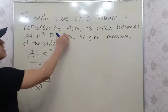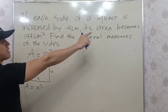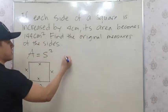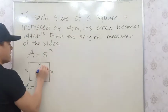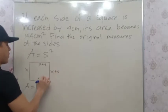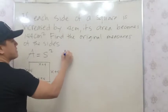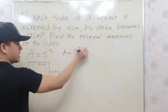But since it says we're going to increase each side by 4 cm, and its area becomes 144 cm², each side becomes X + 4. The new area is equal to S squared, same formula.